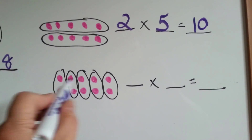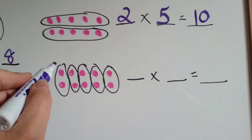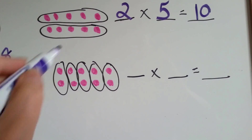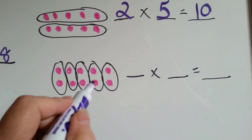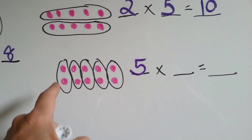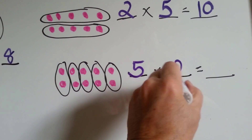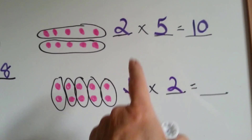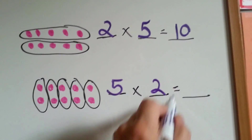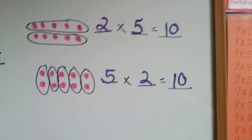Now I've still got ten pink dots, but instead of two black circles around them, I've got five black circles with how many dots in each one? Two. Two times five equals ten, or five times two equals ten. The same product, the same answer.